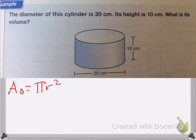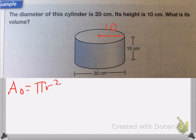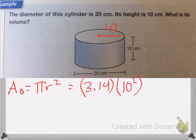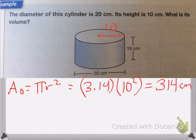I need to first figure out what r is. If my diameter is 20, the radius is half of the diameter, so my radius is going to be equal to 10. So that's going to be 3.14 times 10 squared. 10 squared is 100, so we multiply 3.14 by 100, which equals 314 centimeters squared.